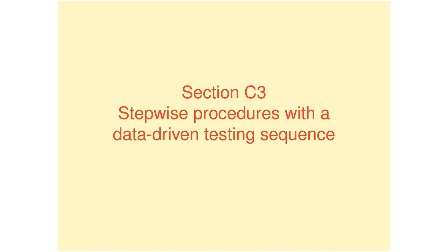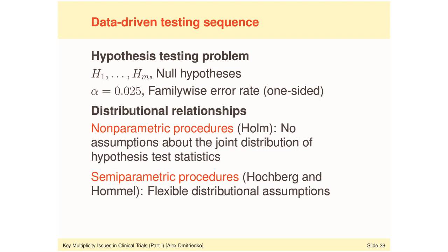Section C3: stepwise procedures with a data-driven testing sequence. We have set the stage and are now ready to define popular multiple testing procedures, discuss their properties, use, and applications in clinical trials and software implementation. In this section — the last of module C — and then in modules D and E, we will talk only about multiple testing procedures. Module F will cover simultaneous confidence intervals, and module G will cover power and sample size calculations in clinical trials with multiple objectives.